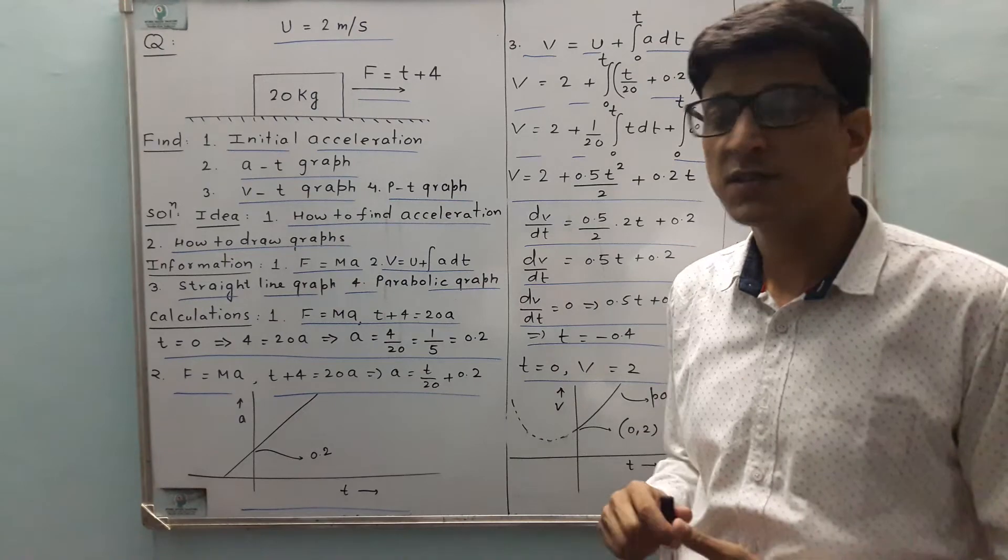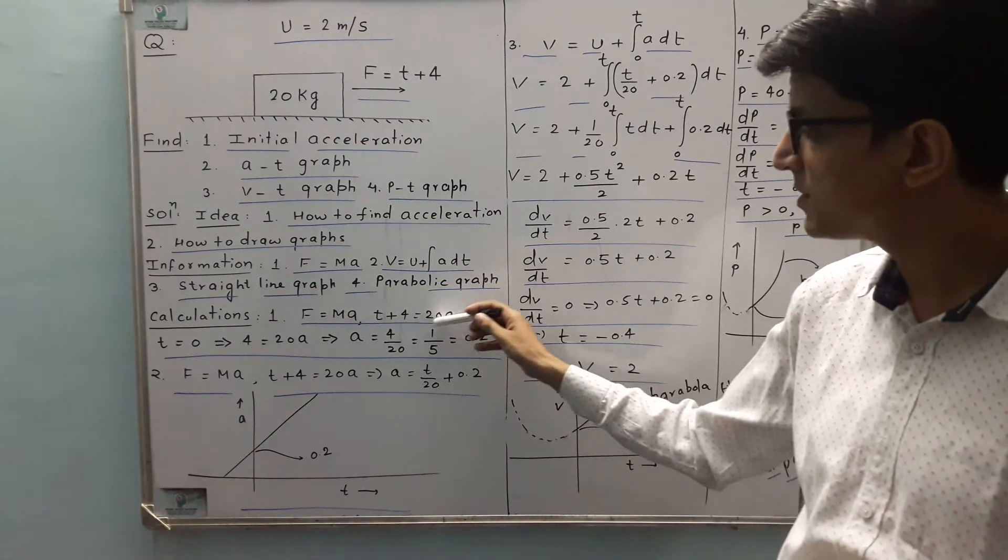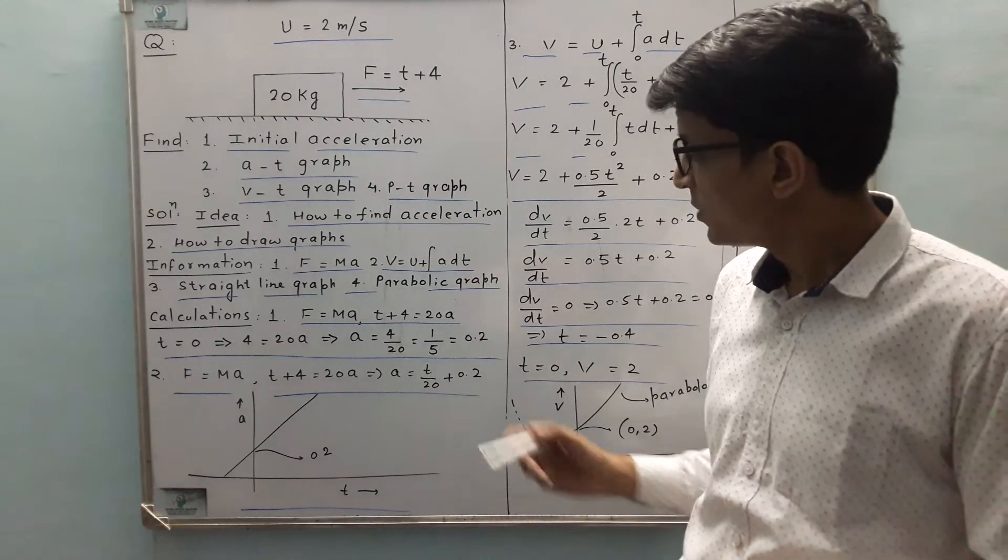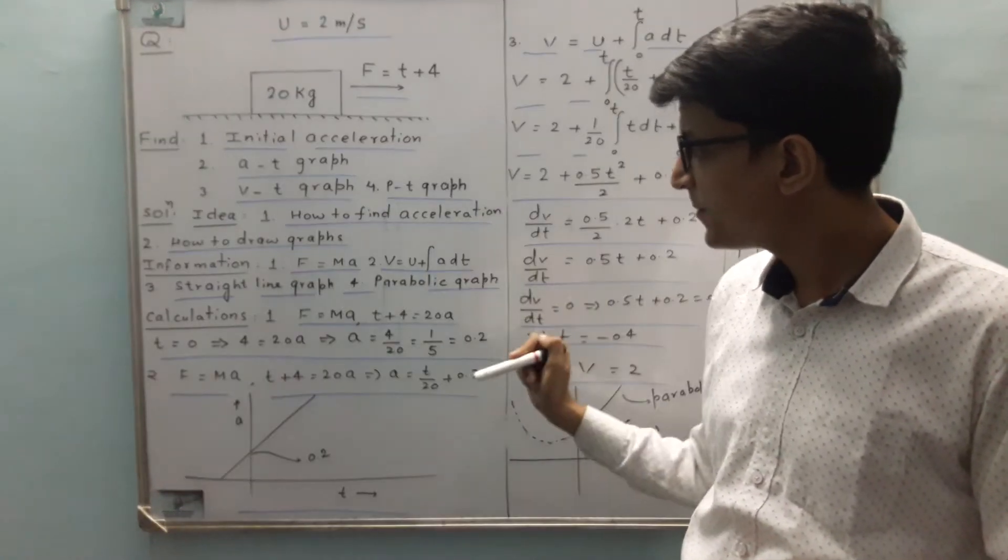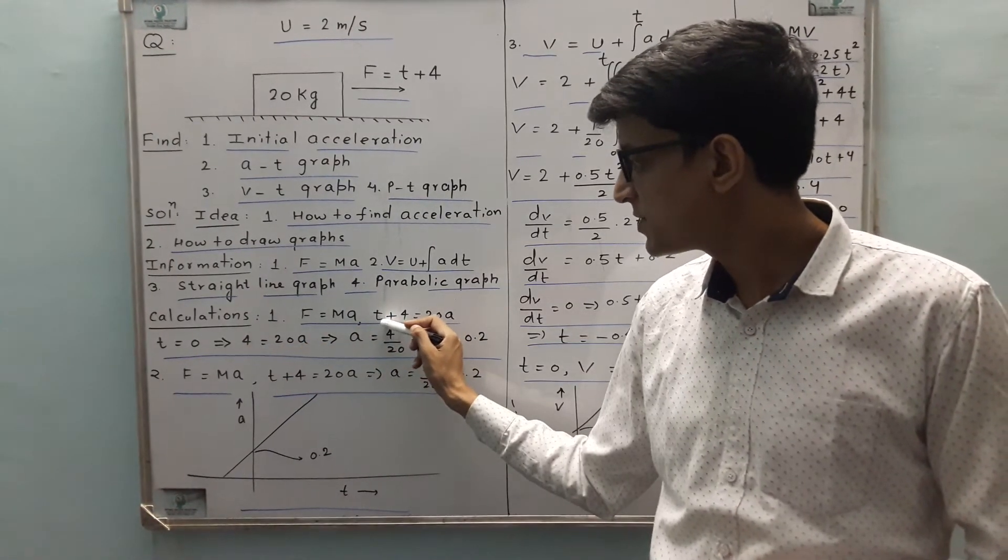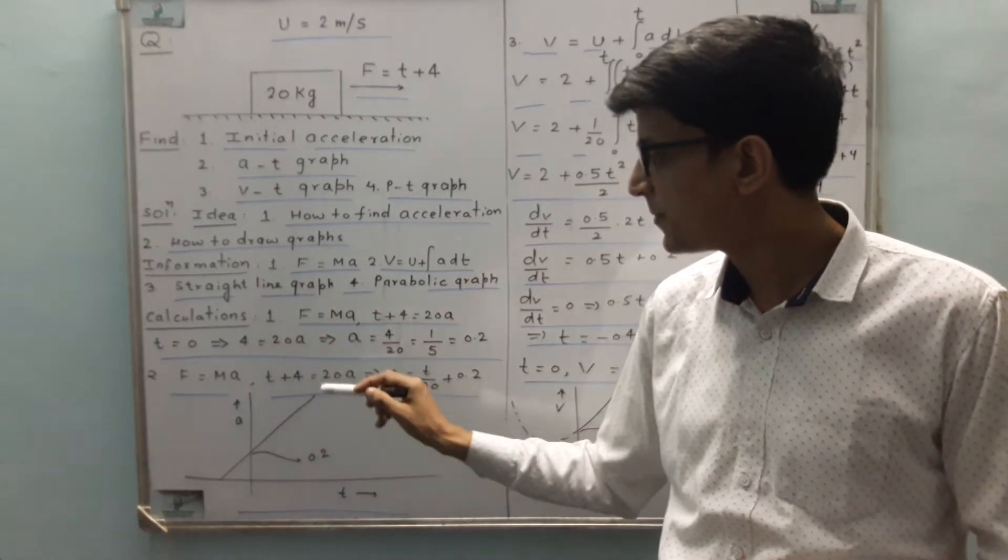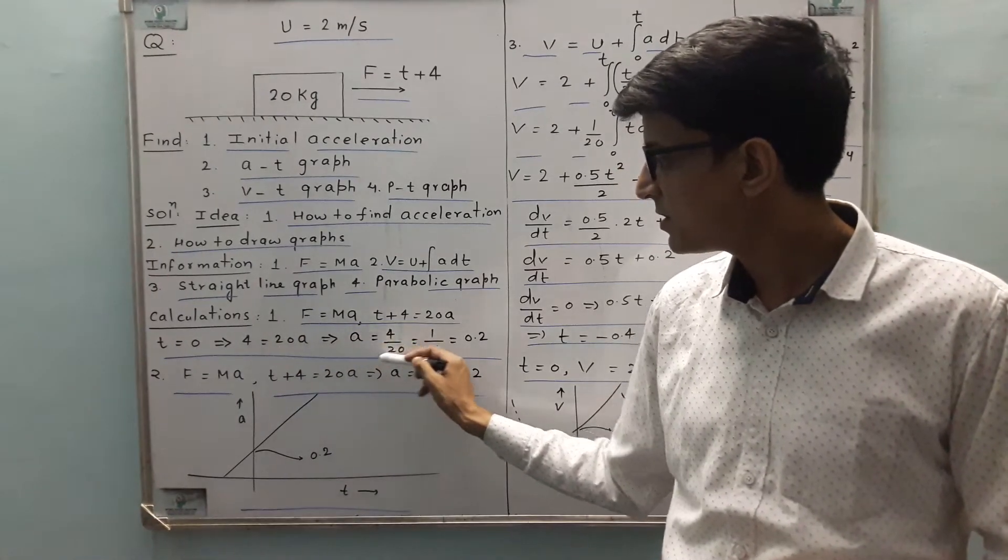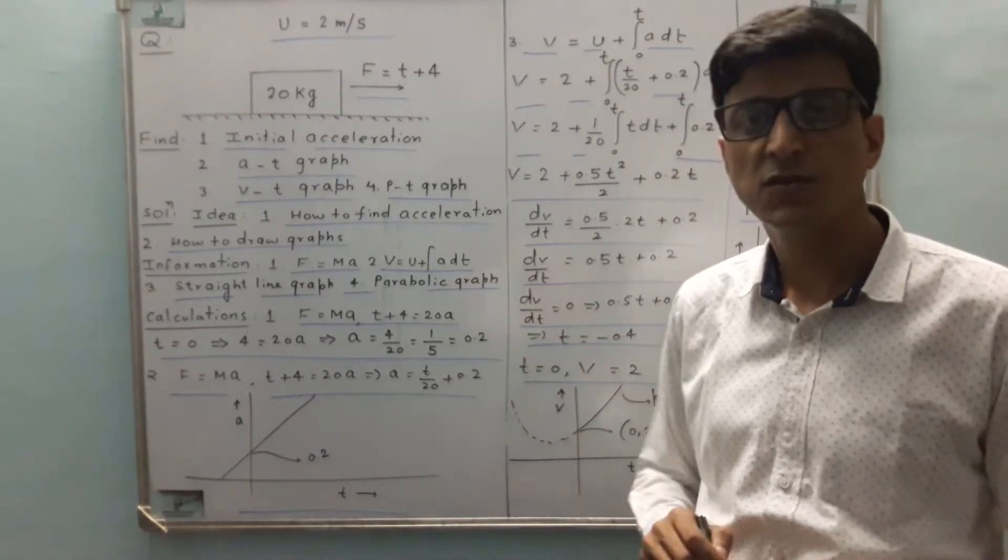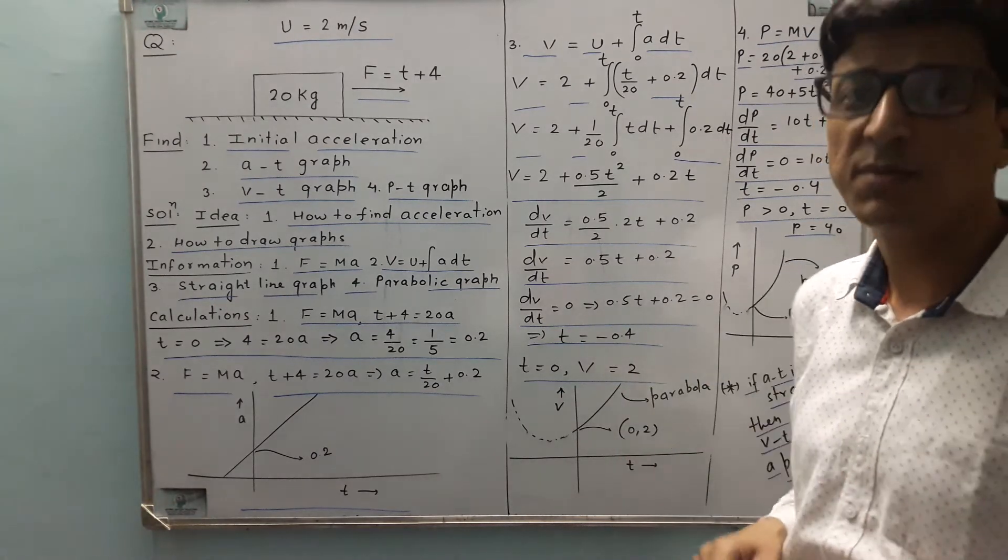Talking about the calculations, the first thing is F equals ma. So F is t plus 4, which equals 20 into a, because the mass of the block is 20 kg. So we have t plus 4 equals 20a. At t equals 0, this will be 4, so 4 equals 20a. That means a equals 4 by 20, which is 1 by 5, that is 0.2. So the initial acceleration of the block will be 0.2 meters per second squared.